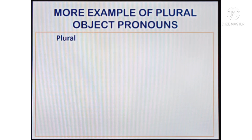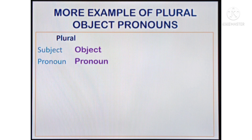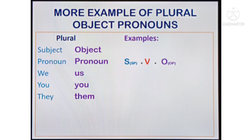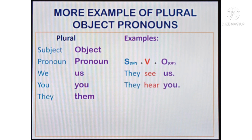More examples of plural object pronouns. Subject pronoun 'we' pairs with object pronoun 'us.' 'You' pairs with 'you,' and 'they' pairs with 'them.' Sentence examples: 'They see us. They hear you. We like them.'